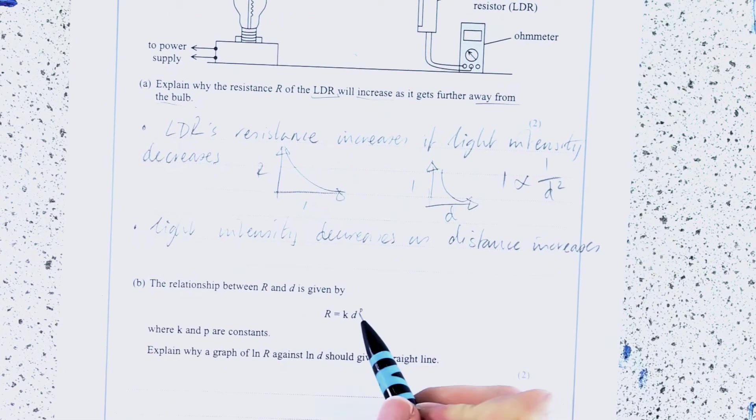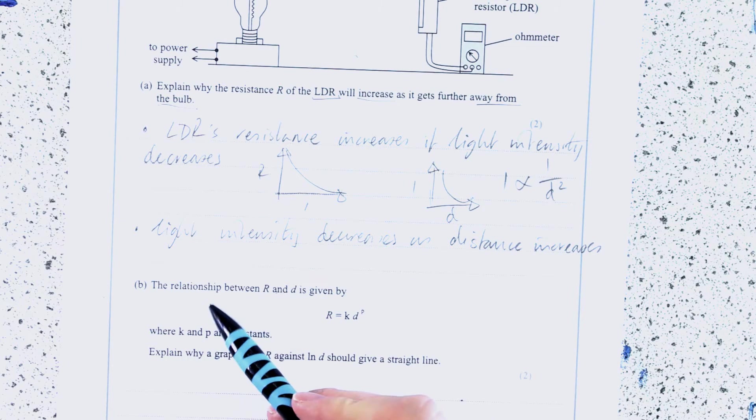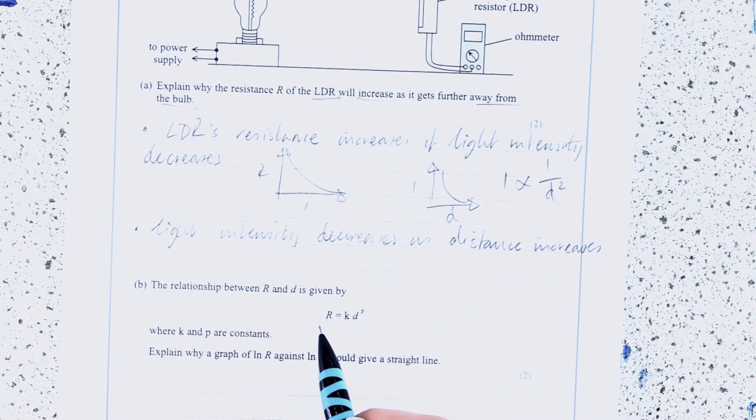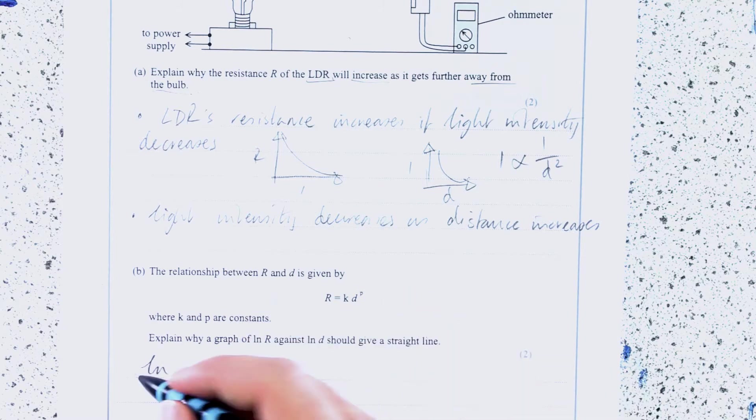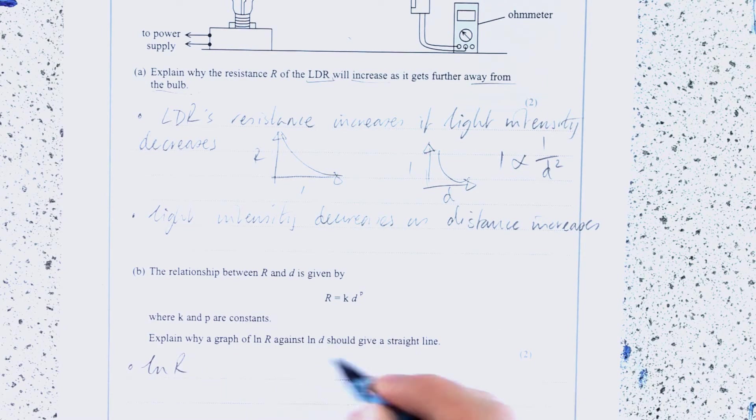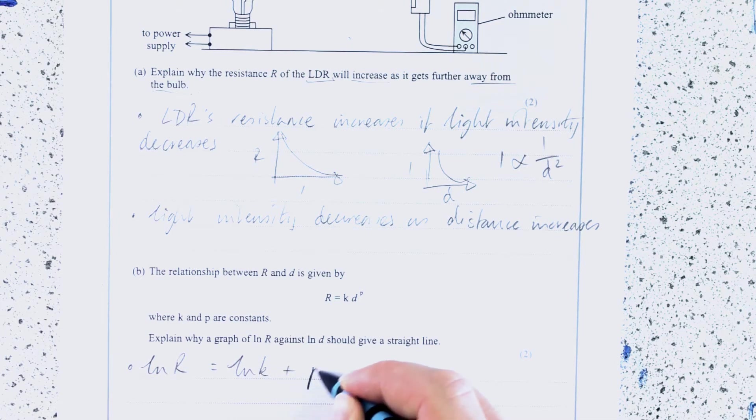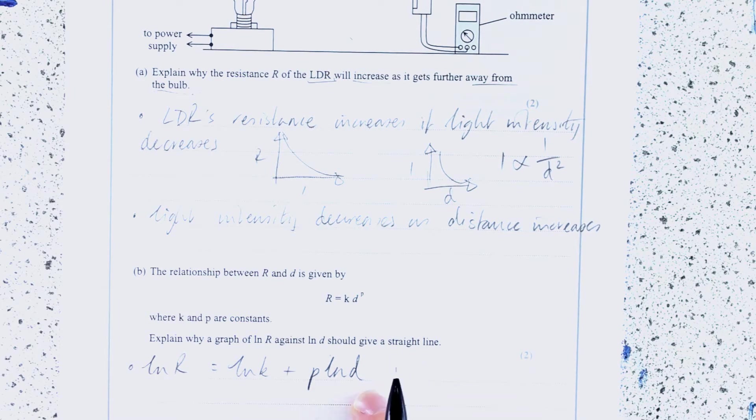To kind of get that, you just need to be able to manipulate this. K and P are constants. The relationship between R and D is given by this. Explain why a graph of Lunar against Lun-D should give a straight line. Well, the first step is to take logs of the whole equation. So you need to know a little bit about your log laws here. Lunar equals Lunk plus P Lun-D. I hope that makes sense to you all. If you're not absolutely sure about that, you want to do a little bit of practice.